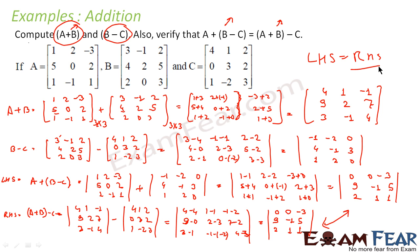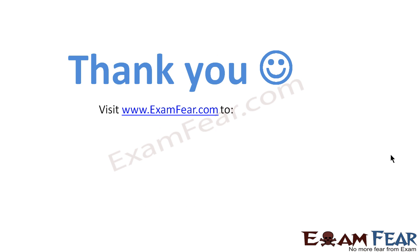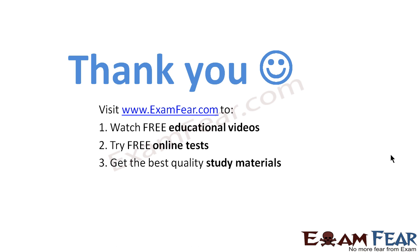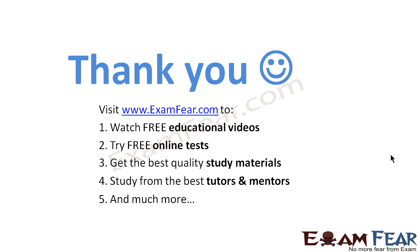This was a straightforward question. What we did: we first found the value of A plus B and B minus C as required, then found the LHS by substituting the value of B minus C, and the RHS by substituting the value of A plus B, and verified that both are equal. Thank you. Visit examfear.com to watch free educational videos, try free online tests, get the best quality study materials, and study from the best tutors and mentors.